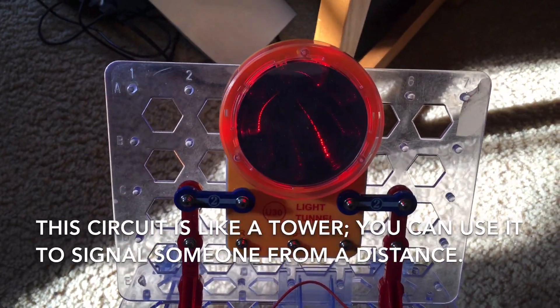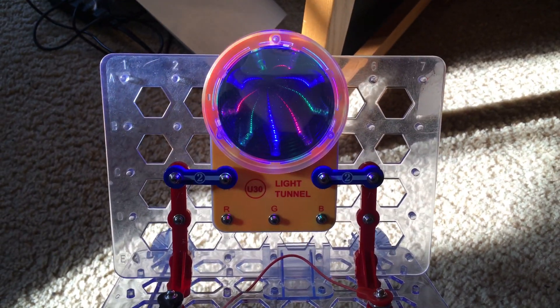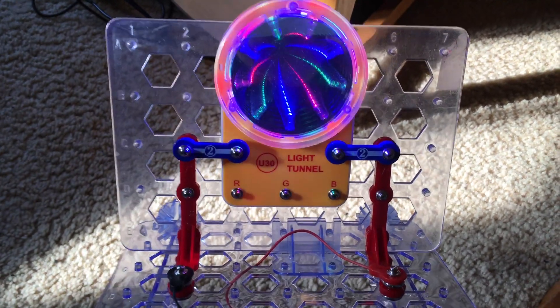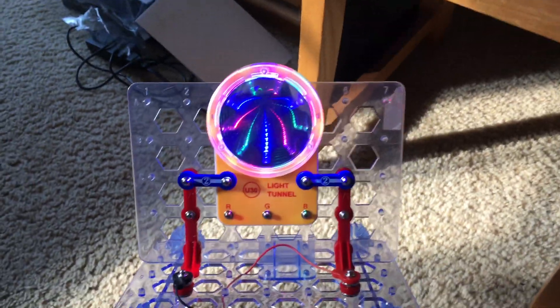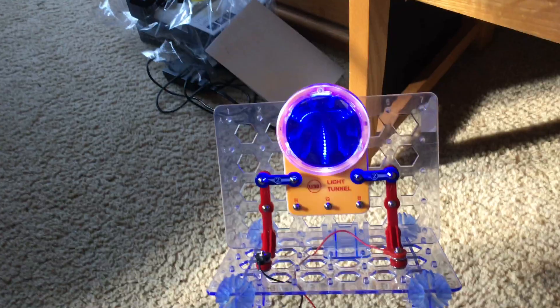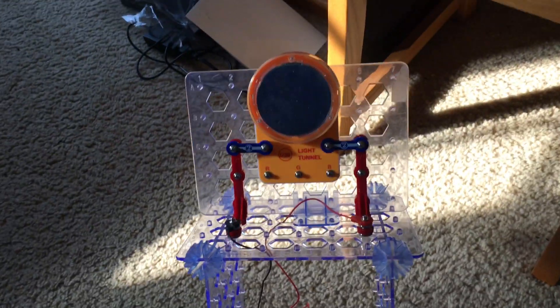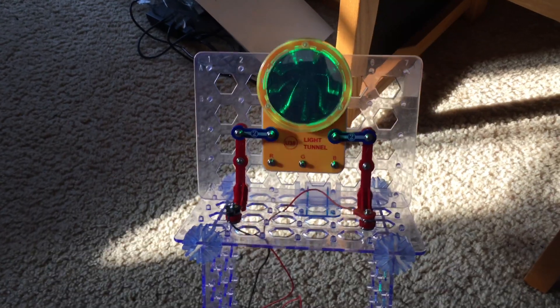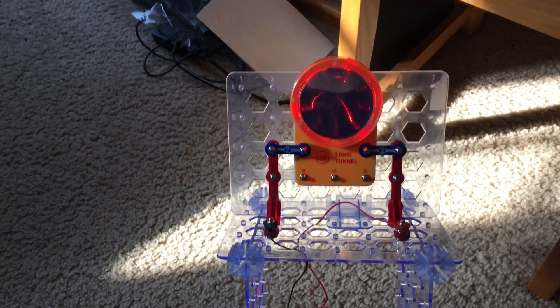Now this is like a tower in which the light tunnel is mounted at the top. You can use this circuit to signal someone in the distance, like if you want to call them over to you, although you would have to make sure they understand in advance that that is your signal for them. You get a nice light show in the process.